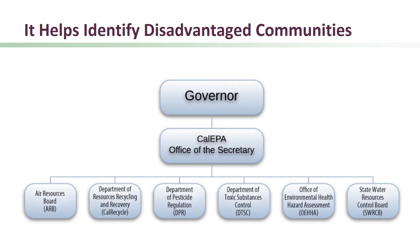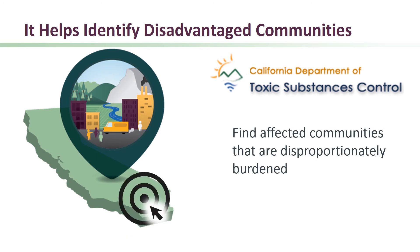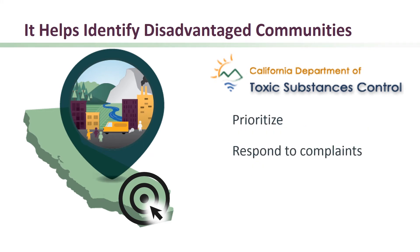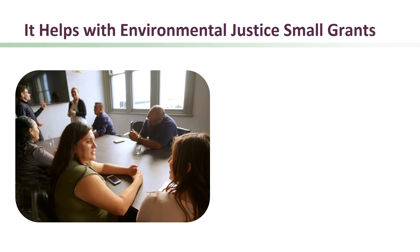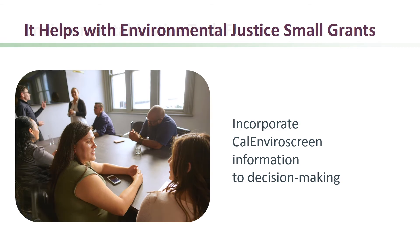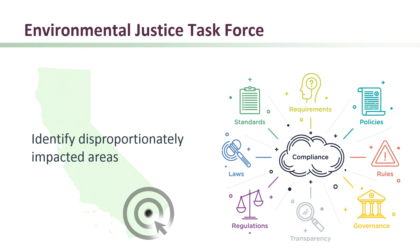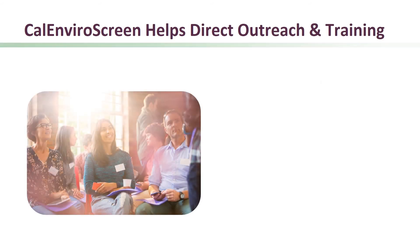CalEPA is made up of a number of boards, departments, and offices. Several of these are currently using the tool in their work. For example, the Department of Toxic Substances Control uses CalEnviroScreen to find disadvantaged communities that are disproportionately burdened, so the department can prioritize responding to their complaints and conduct inspections. CalEPA's Environmental Justice Small Grant Program helps eligible nonprofit community groups and tribal governments address environmental justice issues and incorporate information from CalEnviroScreen into their decision-making. The agency's Environmental Justice Task Force has also used CalEnviroScreen to identify disproportionately impacted areas for compliance assistance and enforcement efforts. CalEPA uses CalEnviroScreen to direct outreach and training for community groups and state and local government organizations.